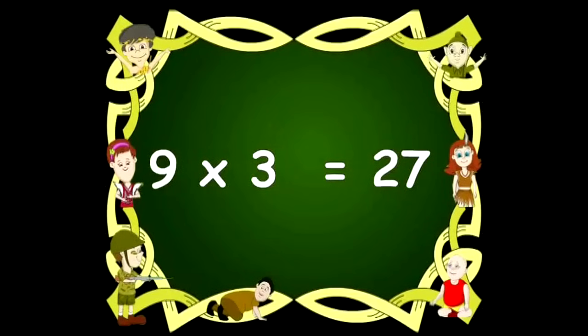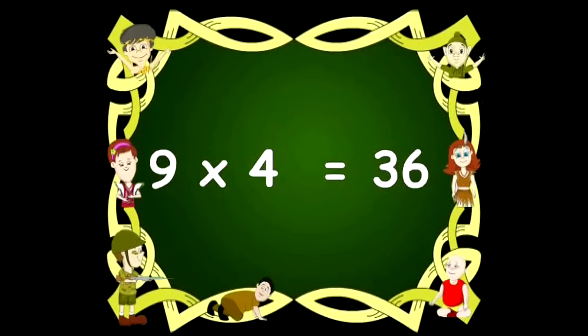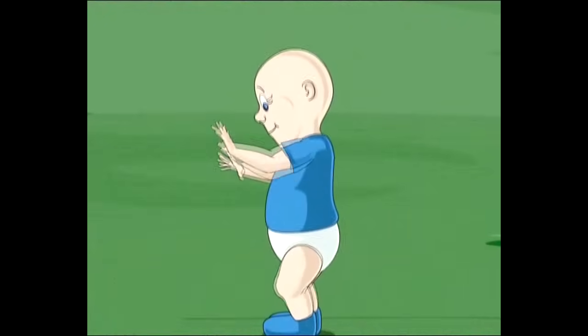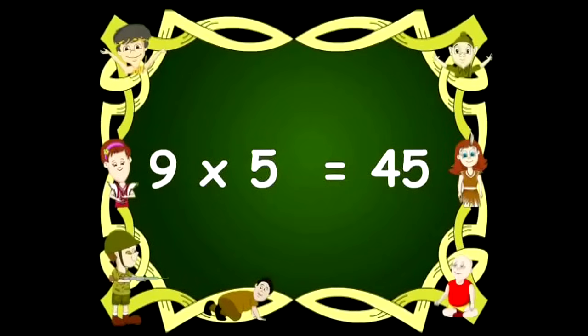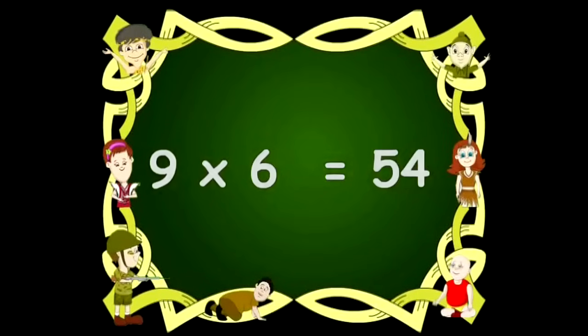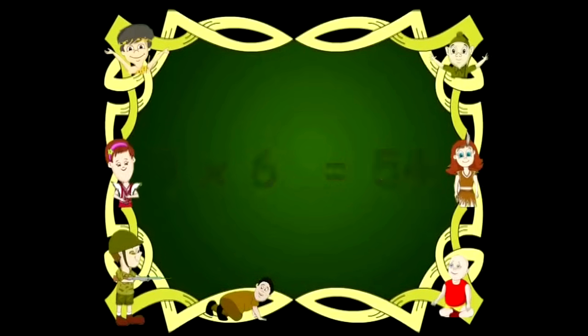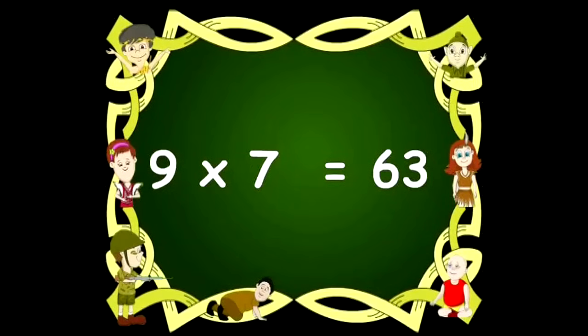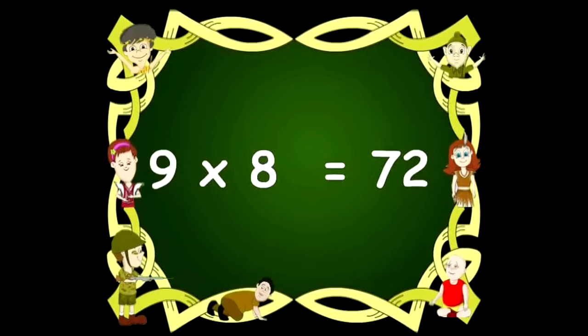Nine fours are thirty-six. Nine fives are forty-five. Nine sixes are fifty-four. Nine sevens are sixty-three. Nine eights are seventy-two.